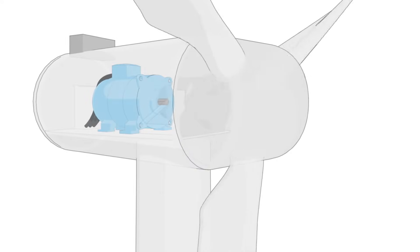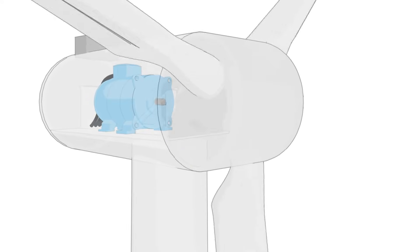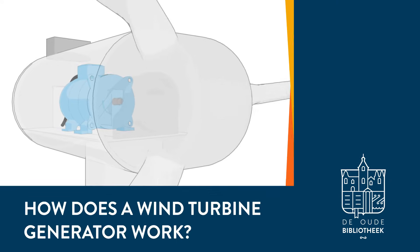Wind turbines use generators to transform kinetic energy into electricity. But how does a generator do that? Let's find out what's happening.